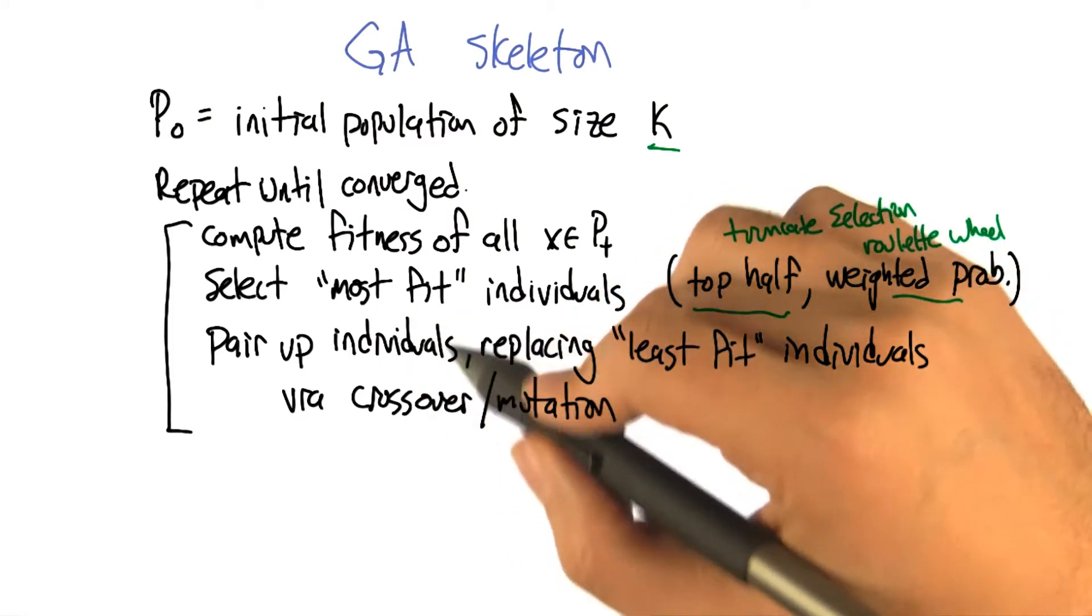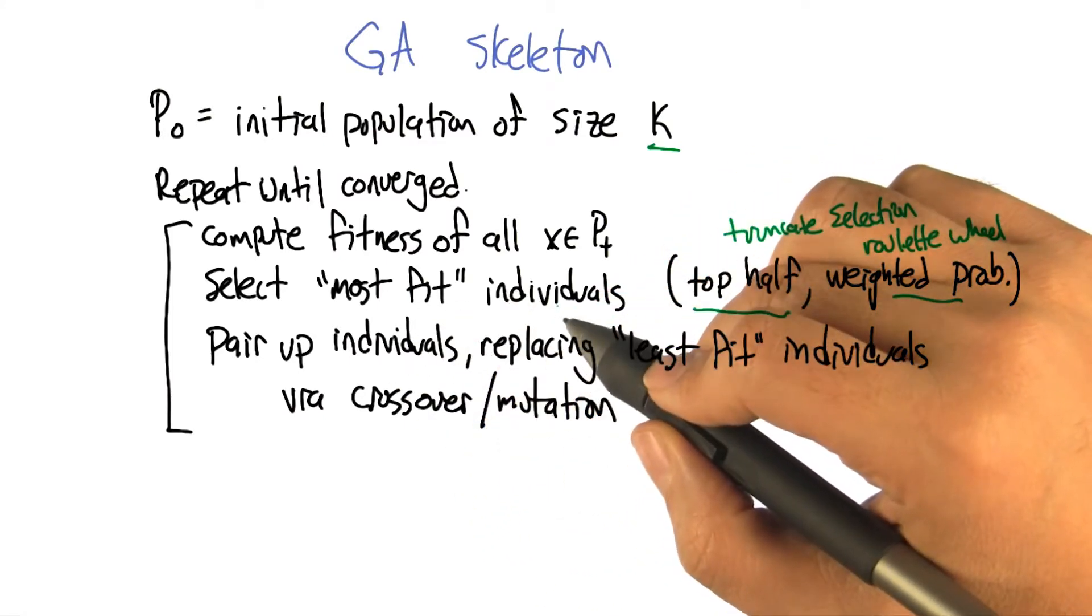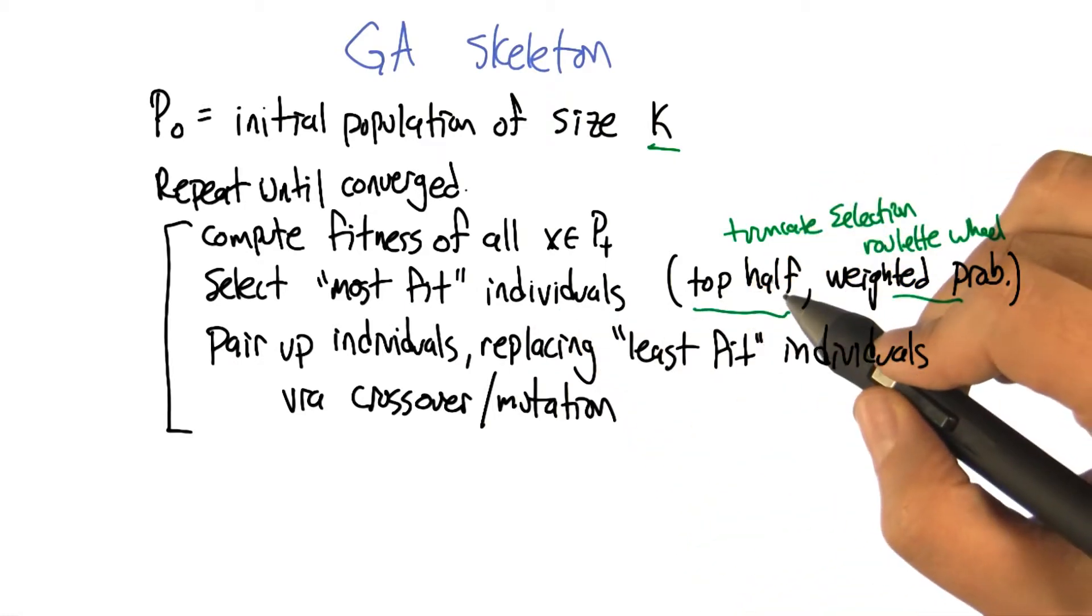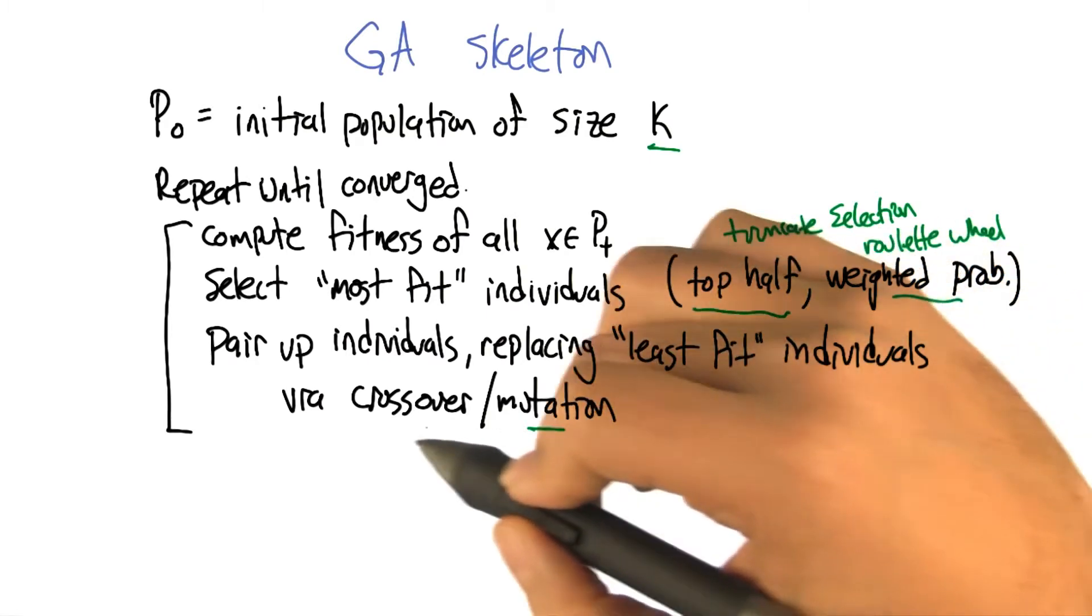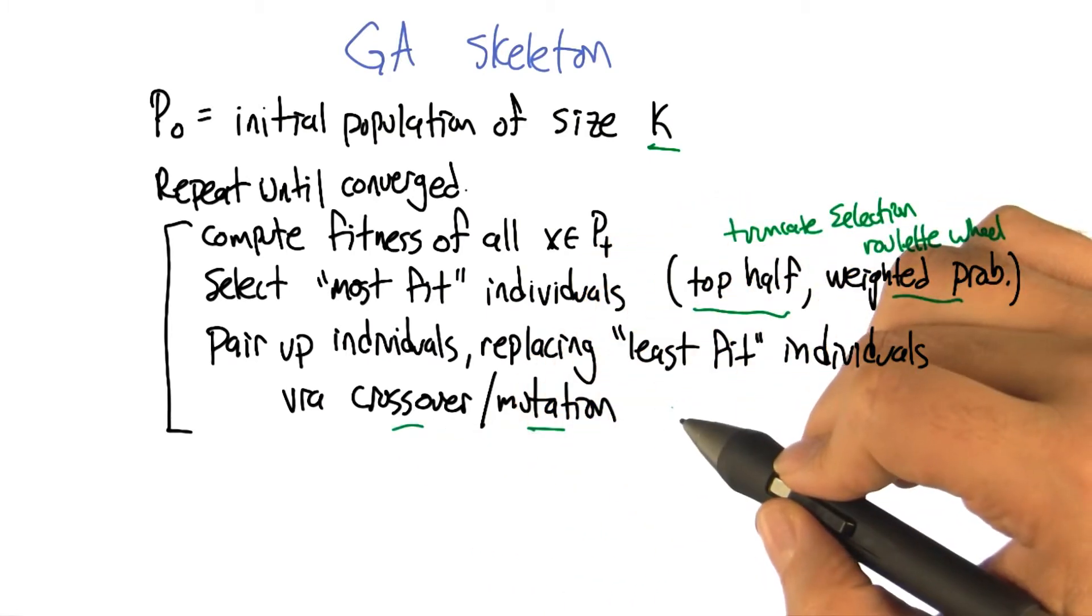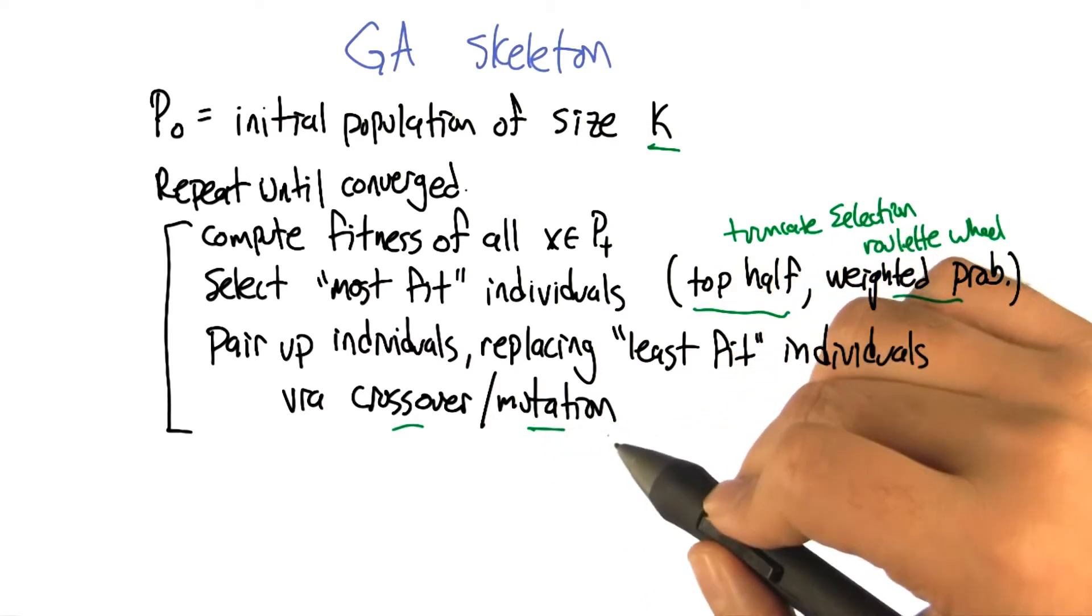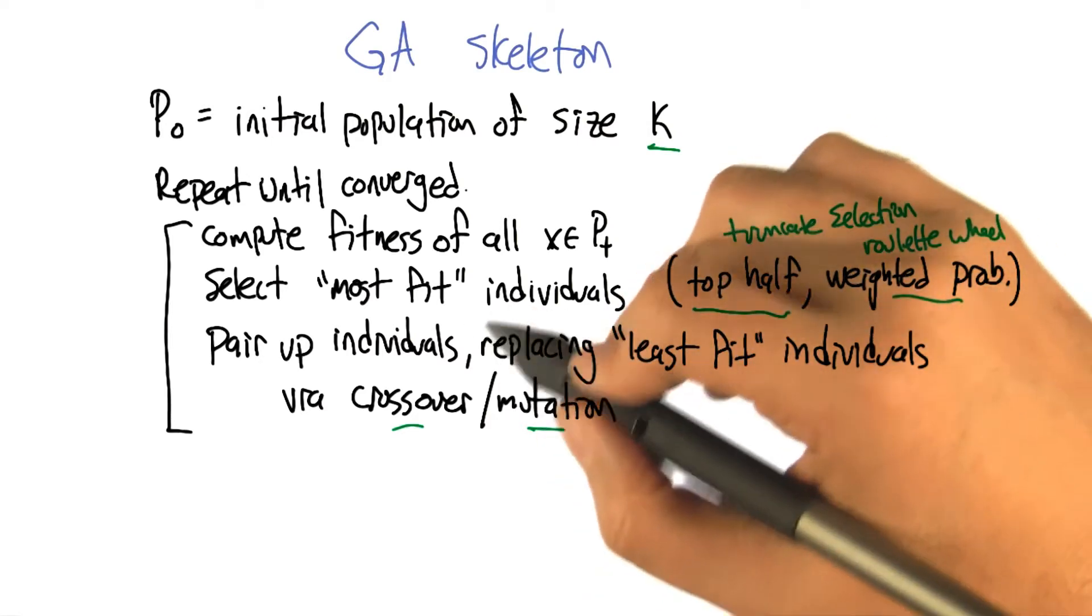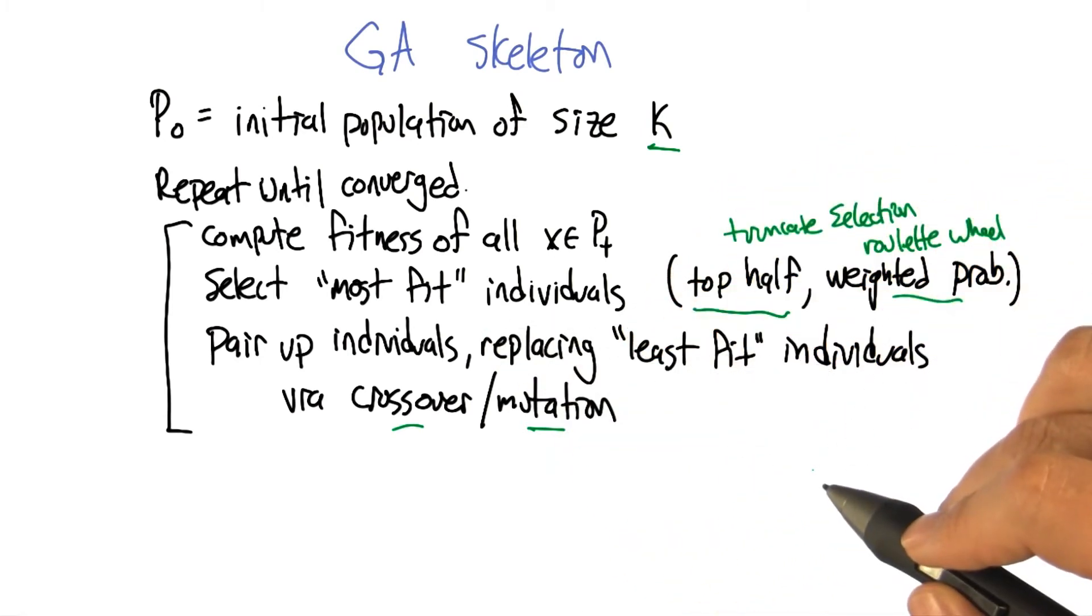Then what we're going to do is pair up those most fit individuals. This is like a dating service now. And let them produce offspring using crossover and maybe a little bit mutation too. So instead of just taking the combination of the two parent individuals, we take their combination and then we make little local changes to it to mutate them. And we let that new offspring replace one of the least fit individuals in the population.